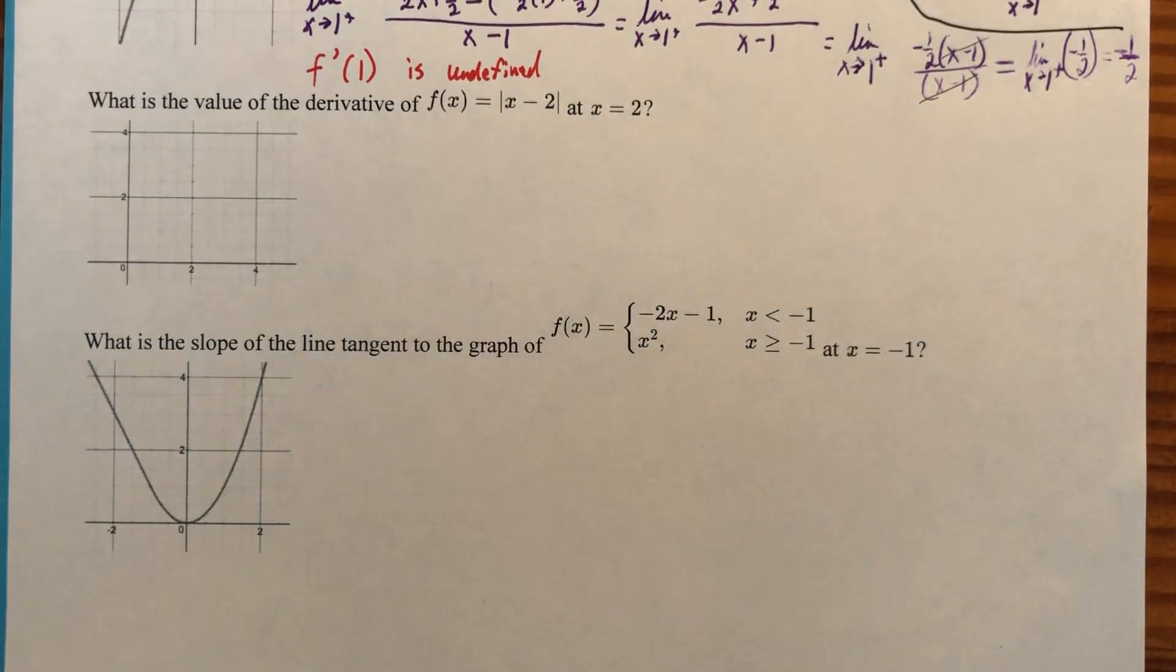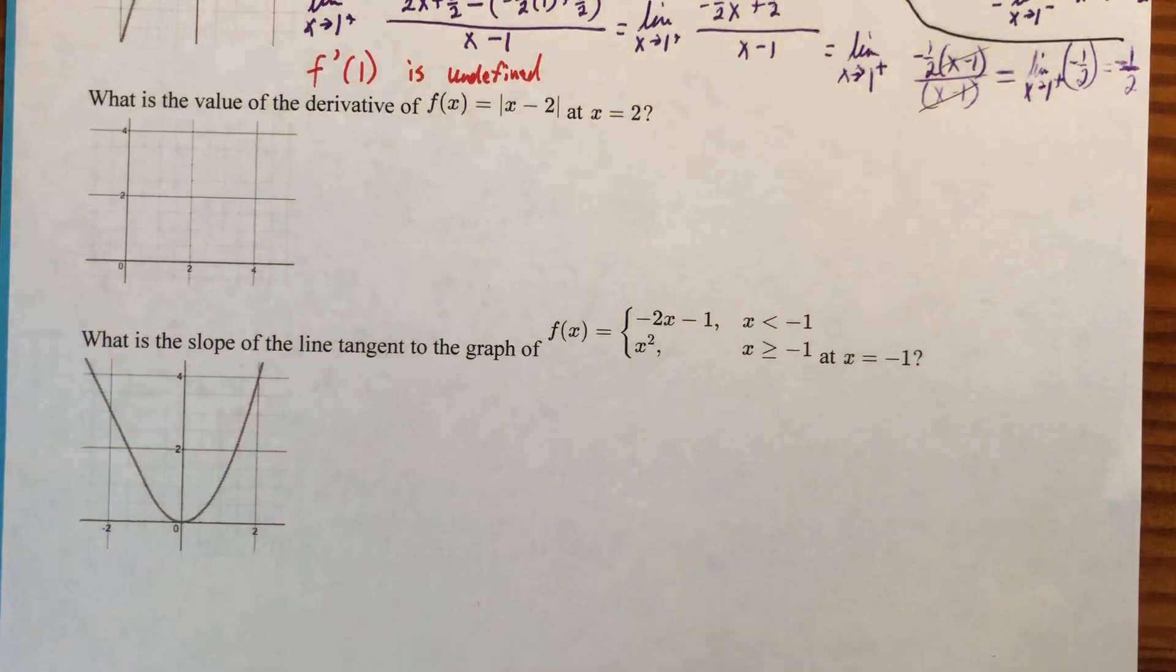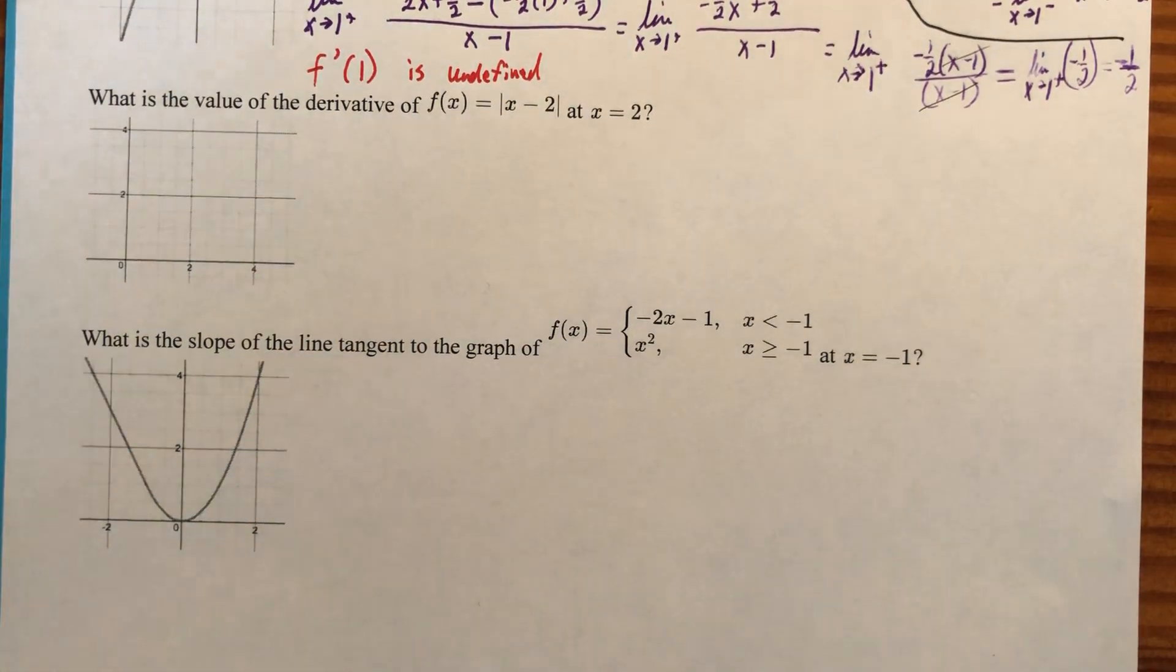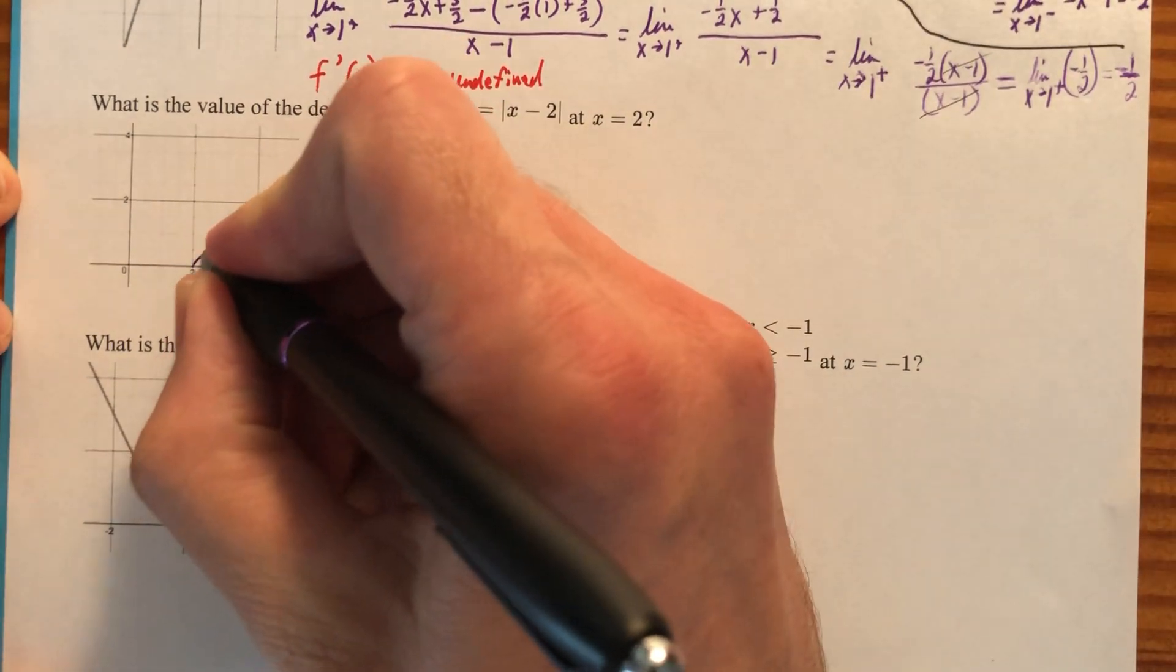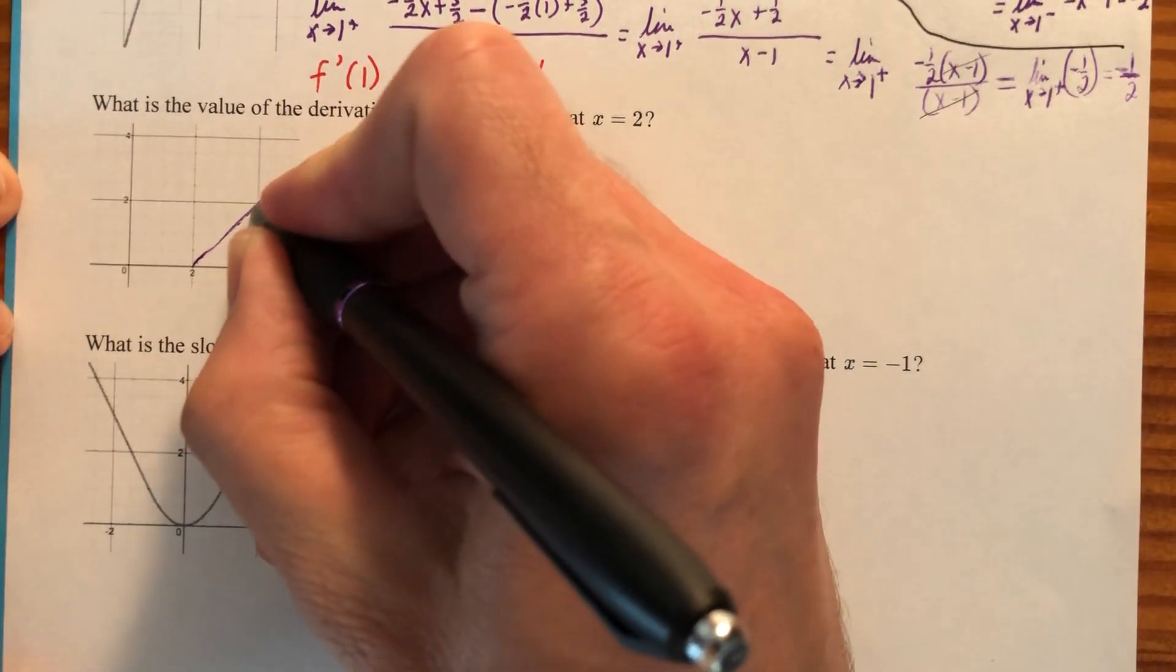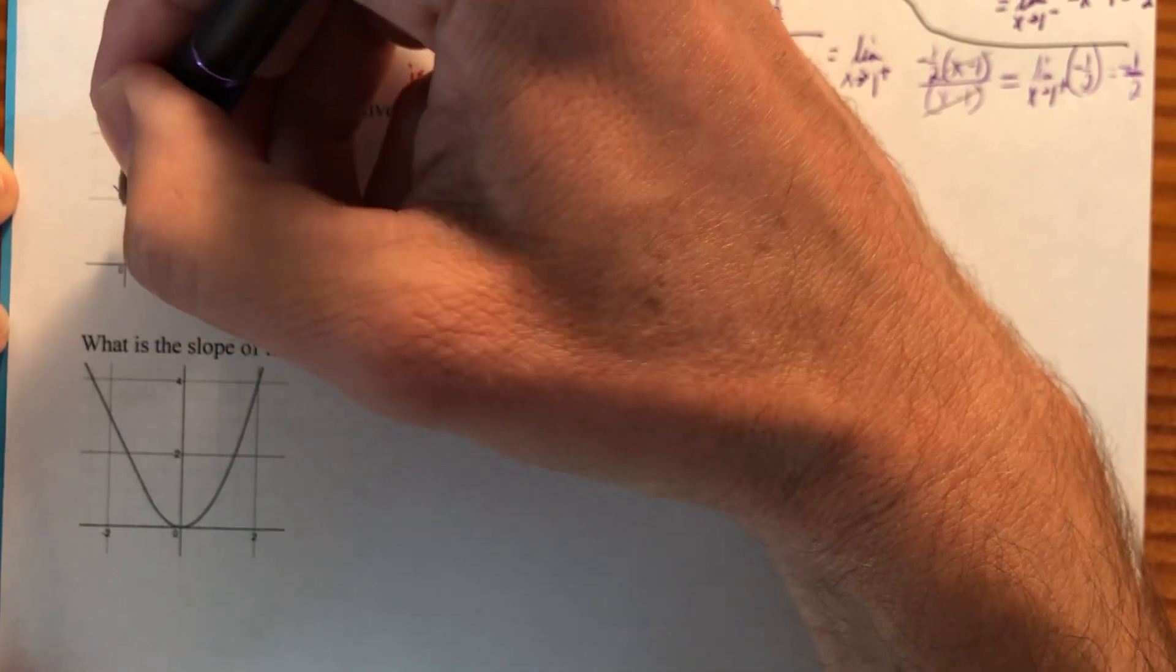Let's find the value of the derivative of f at x equals 2, and here's our function. We're going to just graph it. Let's graph it in purple if it worked. After the last video, I tried getting this pen to work, and it worked briefly. This is the graph of x equals absolute value of x minus 2.